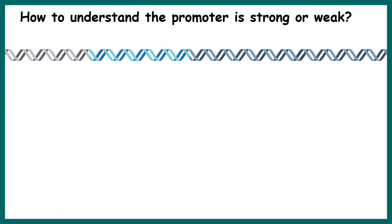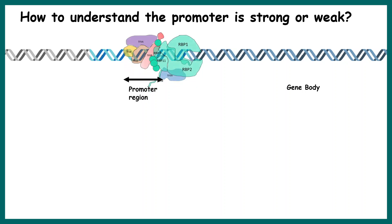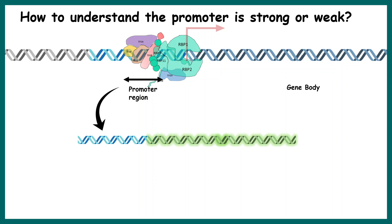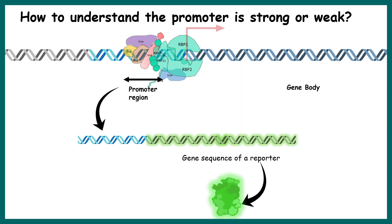We can also determine the strength of a promoter. We take a particular promoter region and instead of the gene body, we place a GFP sequence as our fluorescent reporter. By looking at the GFP fluorescence, we can understand the strength of the promoter.